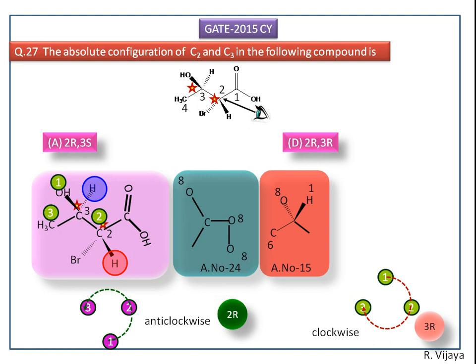The total configuration of this compound at C2 and C3 is option D — that is 2R and 3R.